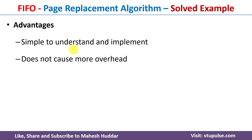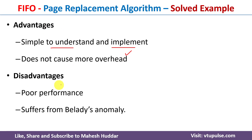The total number of page faults is seven. Now we will discuss the advantages and disadvantages of the FIFO page replacement algorithm. FIFO is one of the simplest page replacement algorithms — it is easy to understand, easy to implement, and does not cause much overhead. Those are the two advantages of the FIFO algorithm.